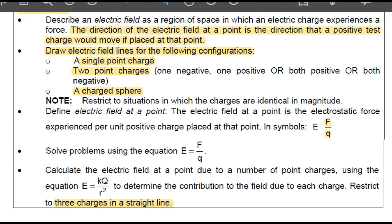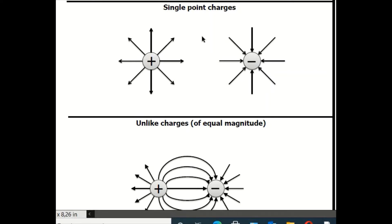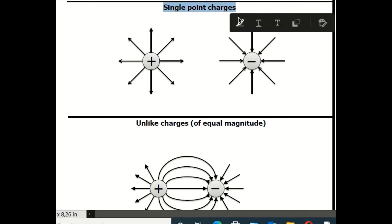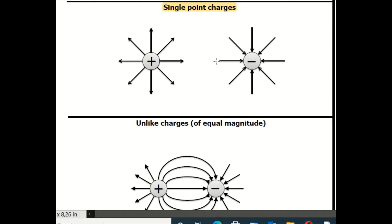Now let's look at how to draw electric field lines around charges. These diagrams are from Science Clinic, which has been made available to you. If the charge is positive, the electric field lines emerge from the positive charge outward. If it's negative, the electric field lines seem to be entering into the negative charge.